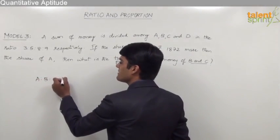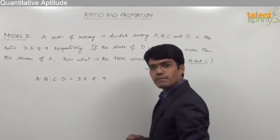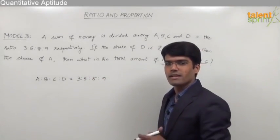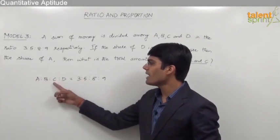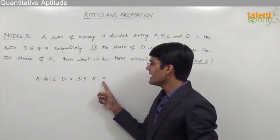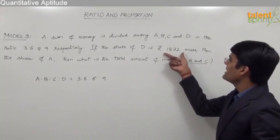Now as given in the question, we know that the ratio of A is to B is to C is to D is equal to 3 is to 5 is to 8 is to 9. That means when the total is divided into equal number of parts, A gets 3 parts, B gets 5 parts, C gets 8 parts, and D gets 9 parts.